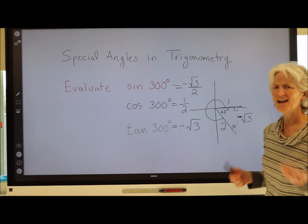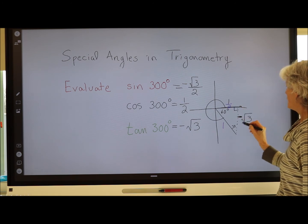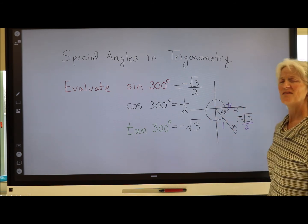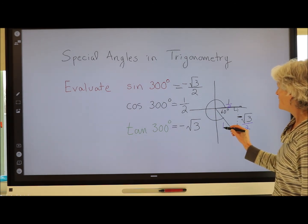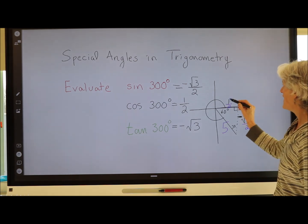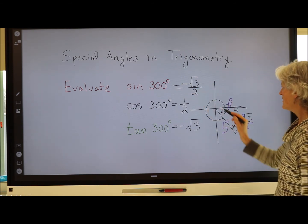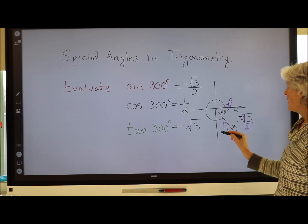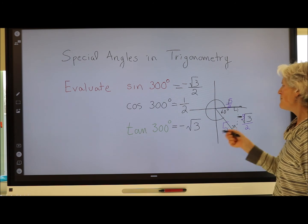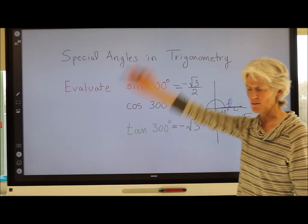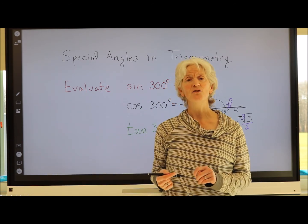For unit circle fans: calling the hypotenuse 1 gives x = 1/2 and y = −√3/2, and you get the same trig ratios. Or call it 5: that gives x = 5/2, y = −5√3/2, and after simplifying the fractions you still get the same answers. It doesn't matter what you call your rotating arm as long as you use the correct side relationships for the 30-60-90 or 45-45-90 triangle.